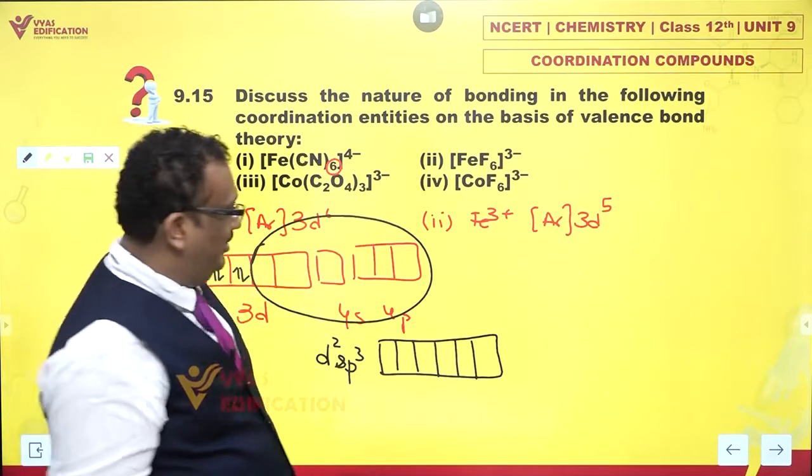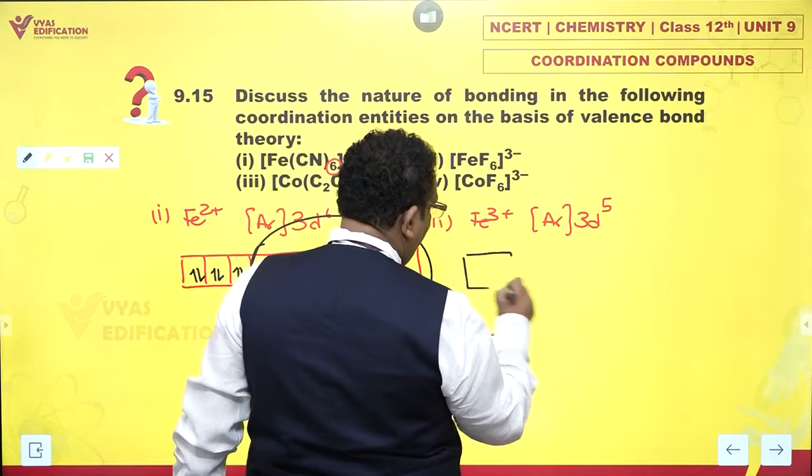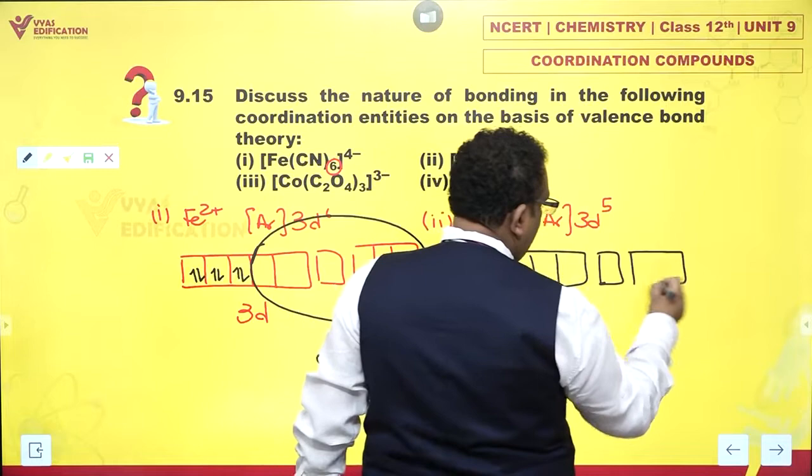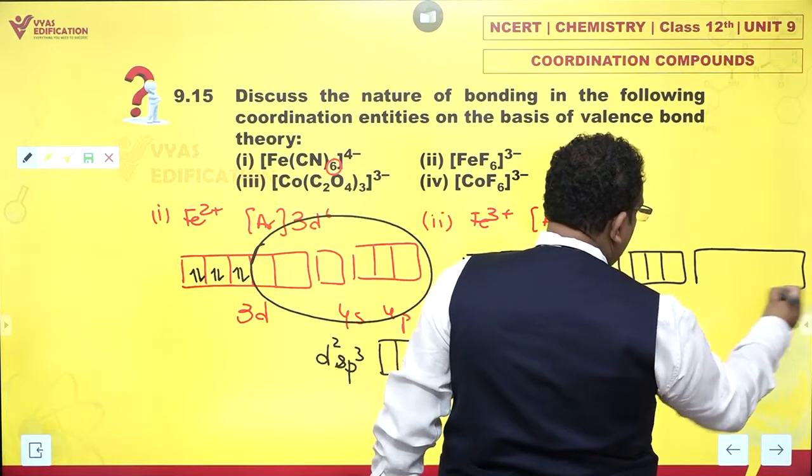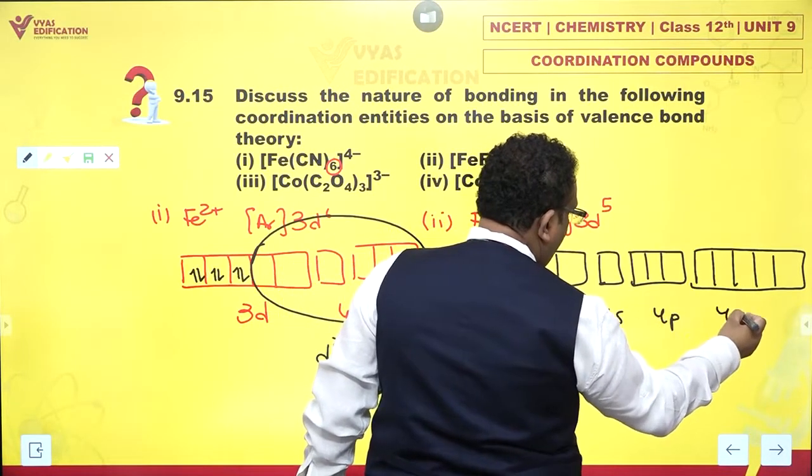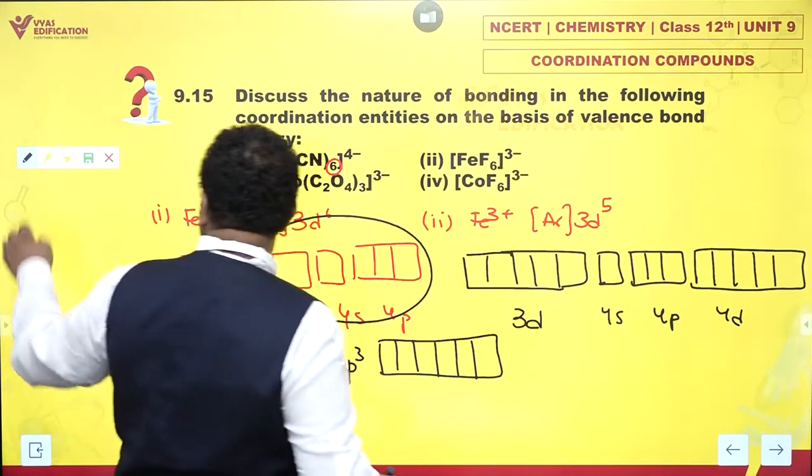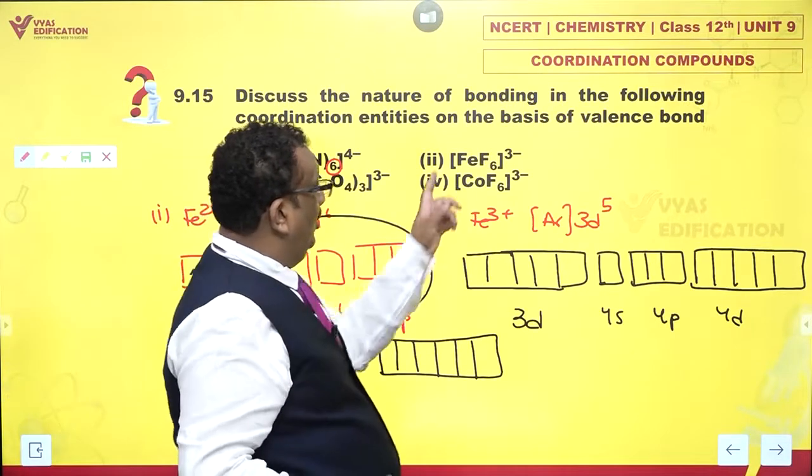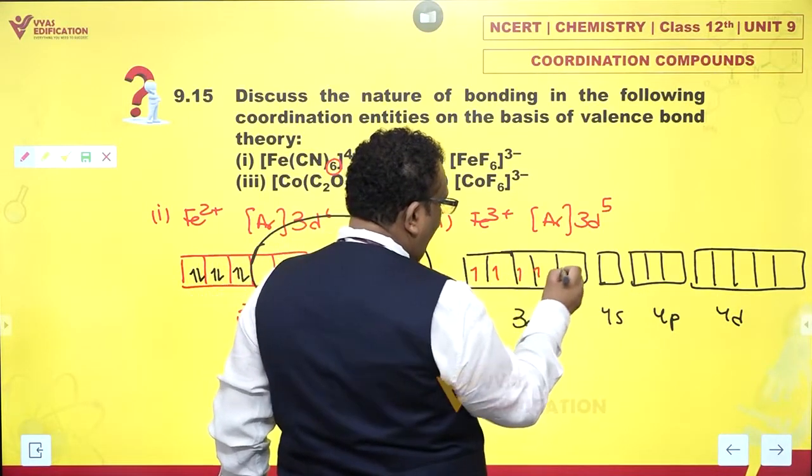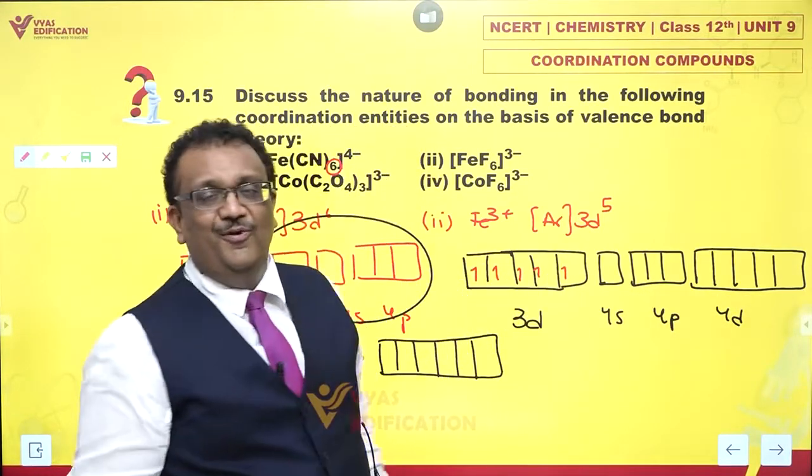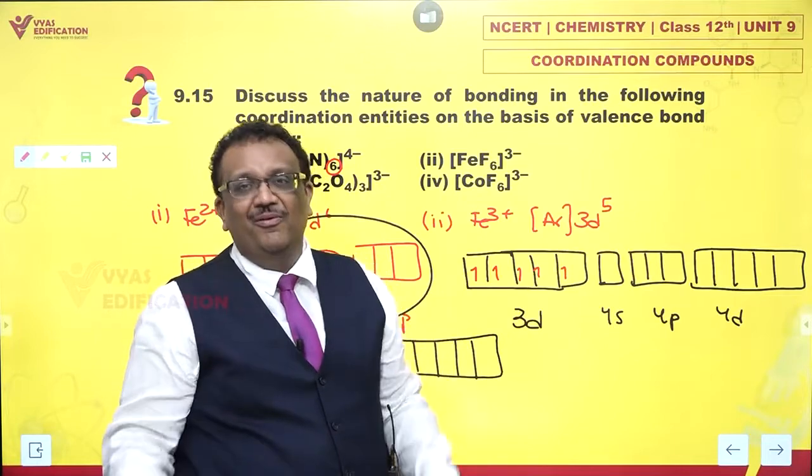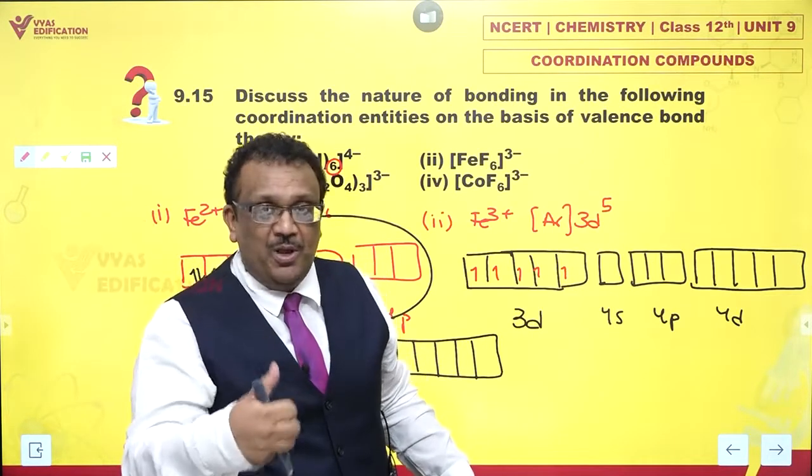What about ferric? Let's try that. First I have 3D, 4S, 4P, and 4D orbitals. Now ferric ions have D5 configuration: 1, 2, 3, 4, 5. This is the D5 configuration. What is the power of fluoride ions? There is no power. Can fluoride ions pair? They can't pair.